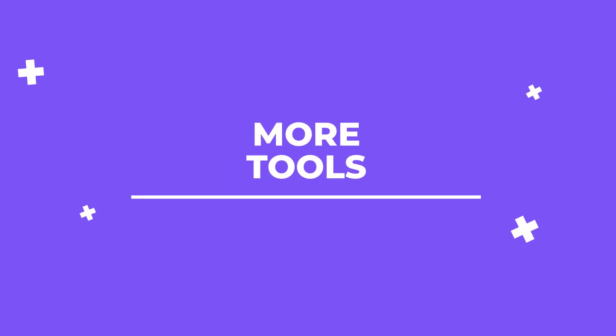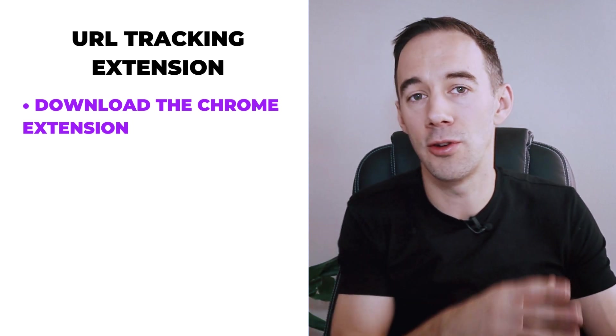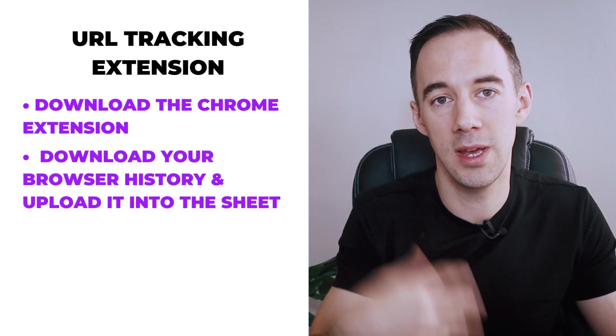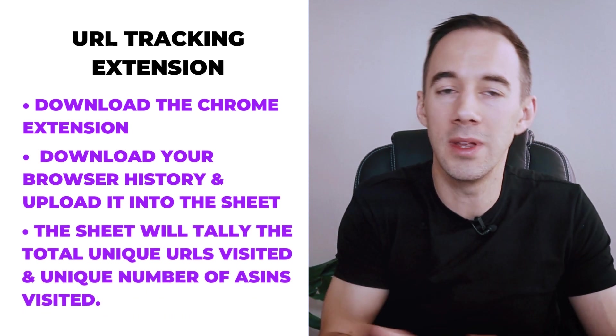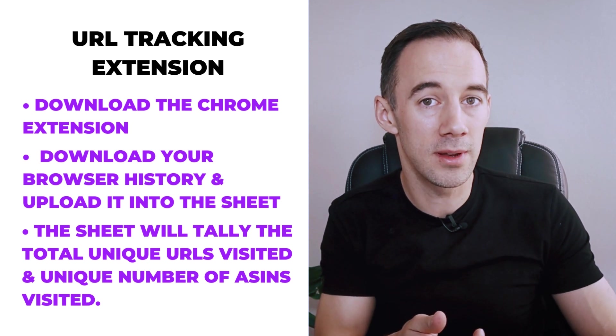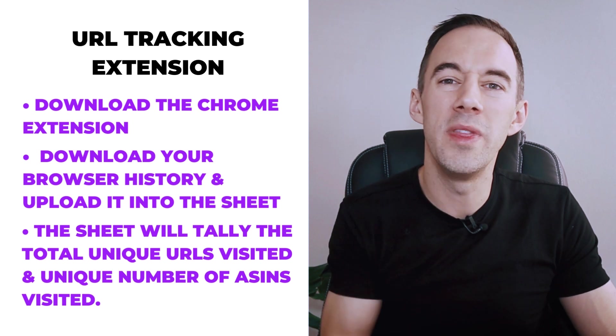Let's jump into some tools. You've got all the essentials to sourcing, but what about tracking? Tracking is crucial because it's all about measuring and optimizing performance. These tools are going to make it easy for you to manage tracking the number of URLs and the number of ASINs. You're going to need to download a Chrome extension — I'll add the link to the free download below. Each day you're going to download your VA's browsing history and upload it into a Google Sheet, which will give you the insights you need. The sheet tallies the total number of unique URLs visited and unique ASINs visited, giving you those insights in literally a second.